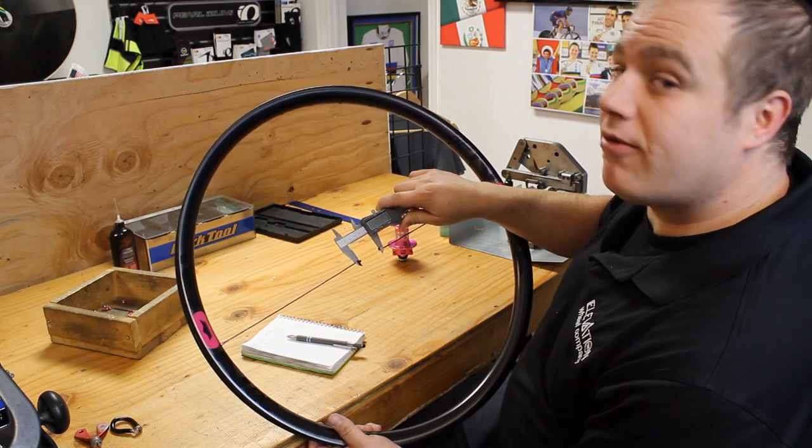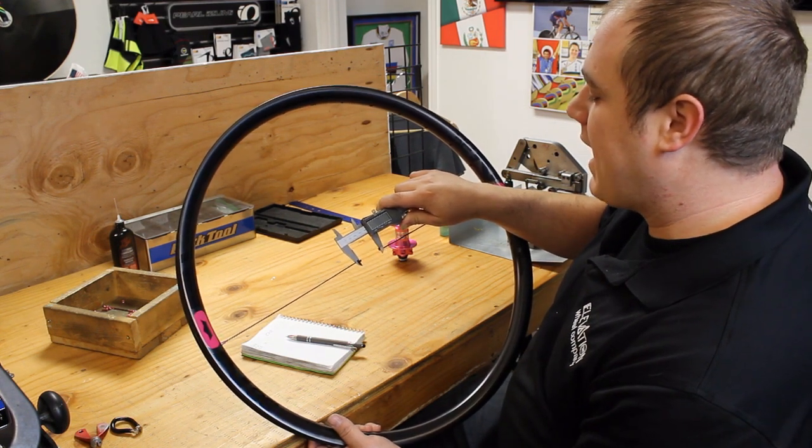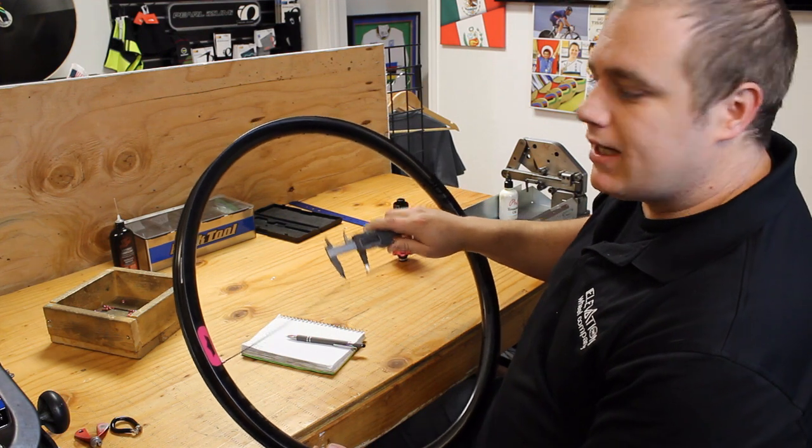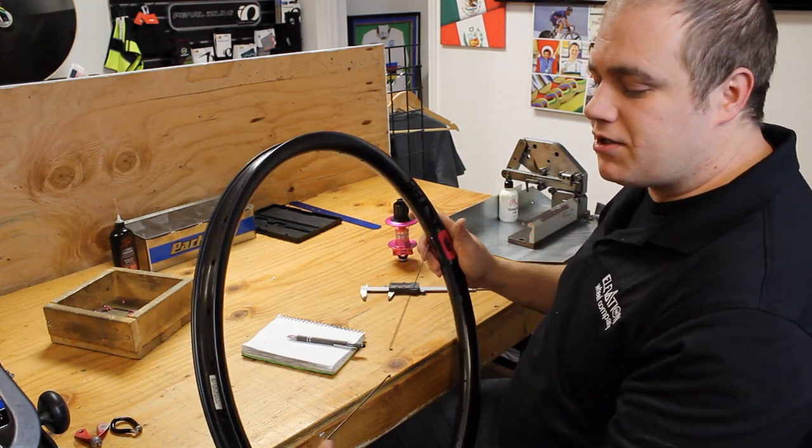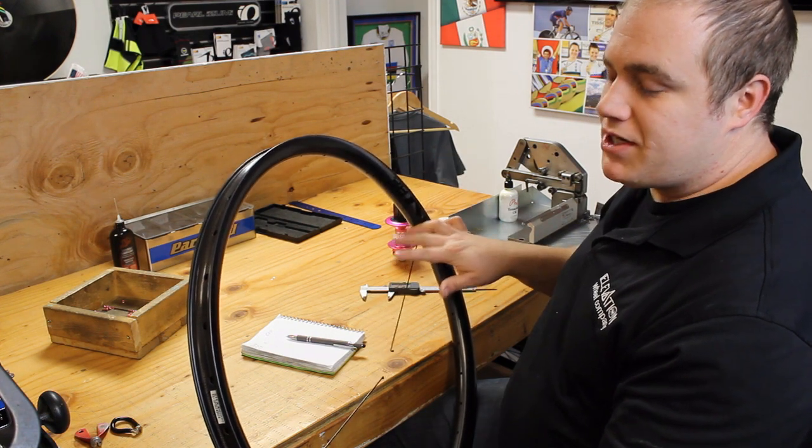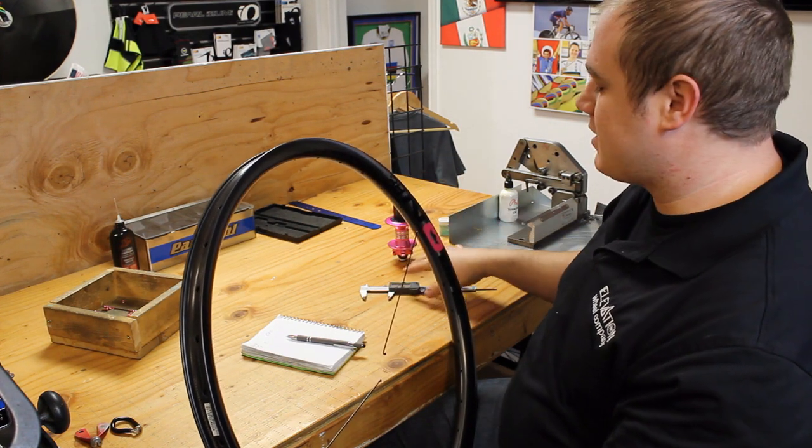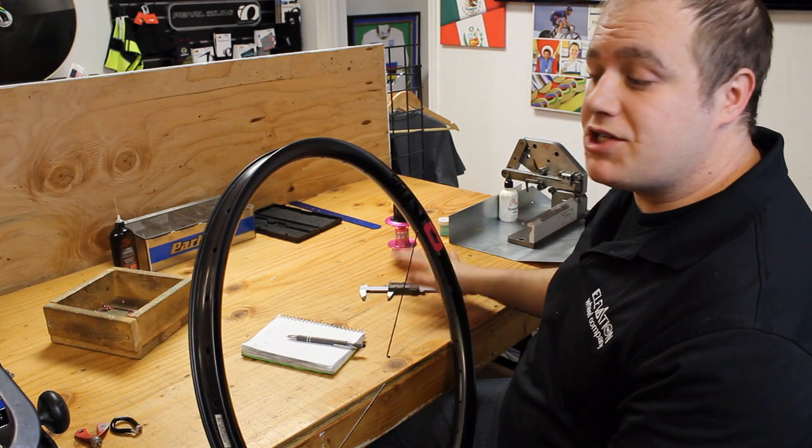Right now I'm seeing about 40 millimeters of gap. So what we do is we'll take the length of the spokes, which is 256 millimeters, add that to each other, 256 plus 256 plus the 40, and that will get you the ERD.